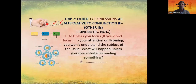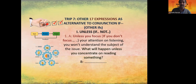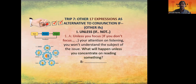Now, trip seven — 17 other expressions. Do you see the diversity? It is really the richness, the wealth of English. 17 expressions as alternatives to the conjunction 'if,' or 'other ifs.' Of course, there is a nuance between 'unless' and 'if,' for example, although they are similar to each other, each is also specific.